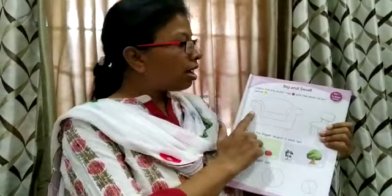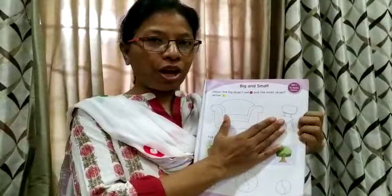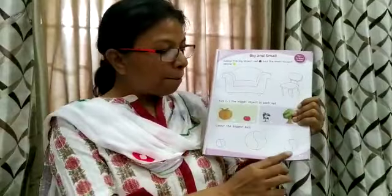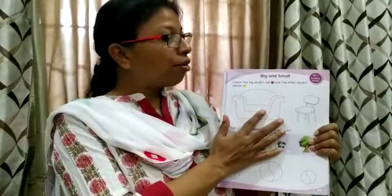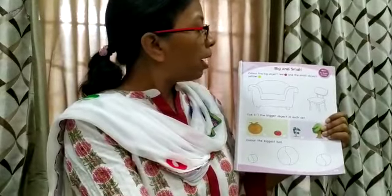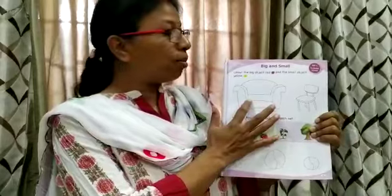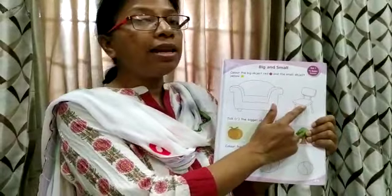In your book there are two pictures: a sofa and a chair. You are going to do this as your homework. Page 1: colour the big object red. The sofa is the big object, so you will colour it red, and the small object you will colour yellow.